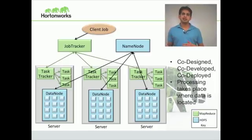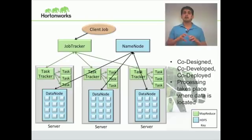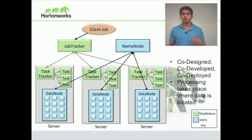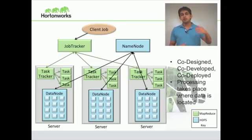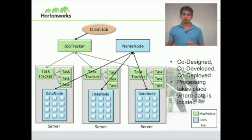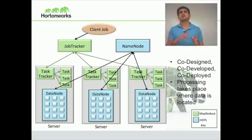HDFS will take every block and replicate it multiple times for fault tolerance, so that losing one node or one rack will not harm you. MapReduce is aware of the fact that your input data is replicated and the same data is available on multiple nodes. So MapReduce tries really hard — and it's actually very efficient — at actually moving the compute or your task to the data node on which your data is actually located.